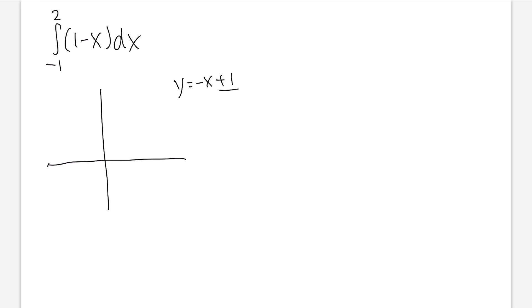We know 1 is the y-intercept. And then the slope is negative 1, so that means we go down 1 and go to the right 1. So we can put another point here, and let's go ahead and connect the dots — that will be a sketch.